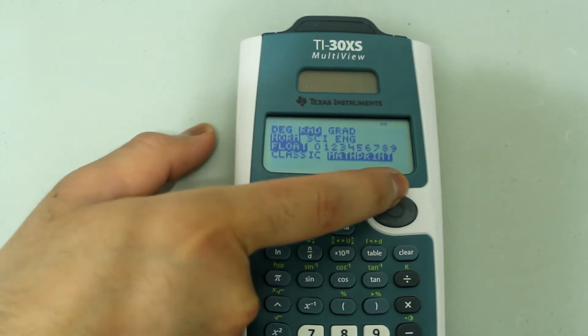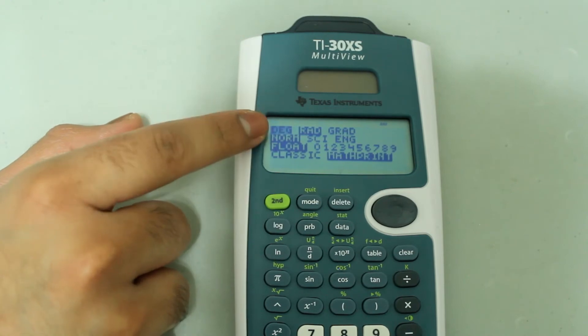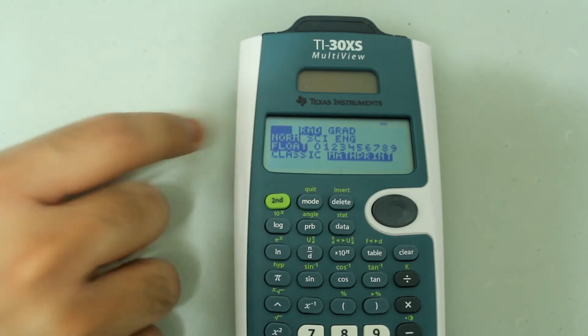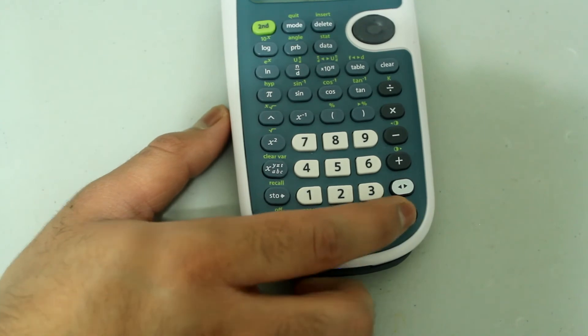I want degrees to be selected, so when the cursor is blinking on degrees, I'm going to press enter.